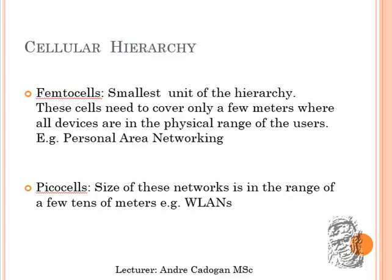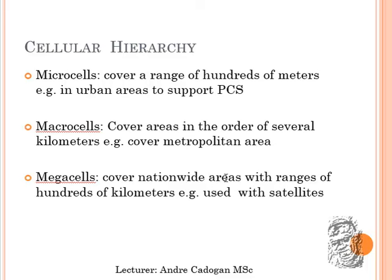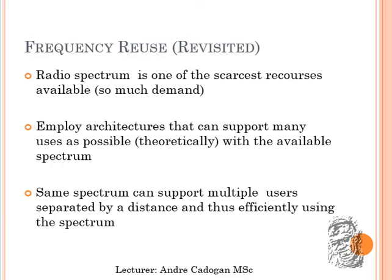Pico cells cover a range of more than tens of meters for Wi-LAN technology, or wide area networks. Then there are micro cells covering hundreds of meters, macro cells in metropolitan areas, and mega cells in satellite areas — that's why you can stay in Trinidad and make a WhatsApp call to someone in Canada using mega cells. Cellular splitting is not limited to a specific geographical area; it can be global too. Radio spectrum is a scarce resource with very high demand, and subscribers use these radio spectrums to make calls, connect to YouTube, WhatsApp, and watch television on mobile phones.